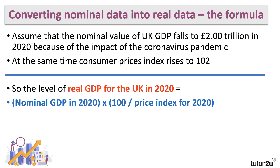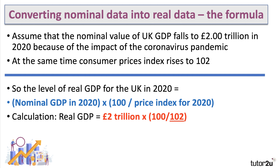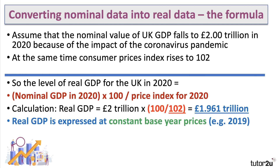So assuming the nominal value falls to two trillion and the consumer price index rises to 102, let's work through the real GDP calculation. Real GDP in 2020 equals nominal GDP times 100, divided by the price index for that year. Putting the numbers in: two trillion times 100 over 102. The factor 100 over 102 gives us a figure of less than one — we are deflating that two trillion figure — which gives us a real value of 1.961 trillion, expressed at constant base year prices for 2019.